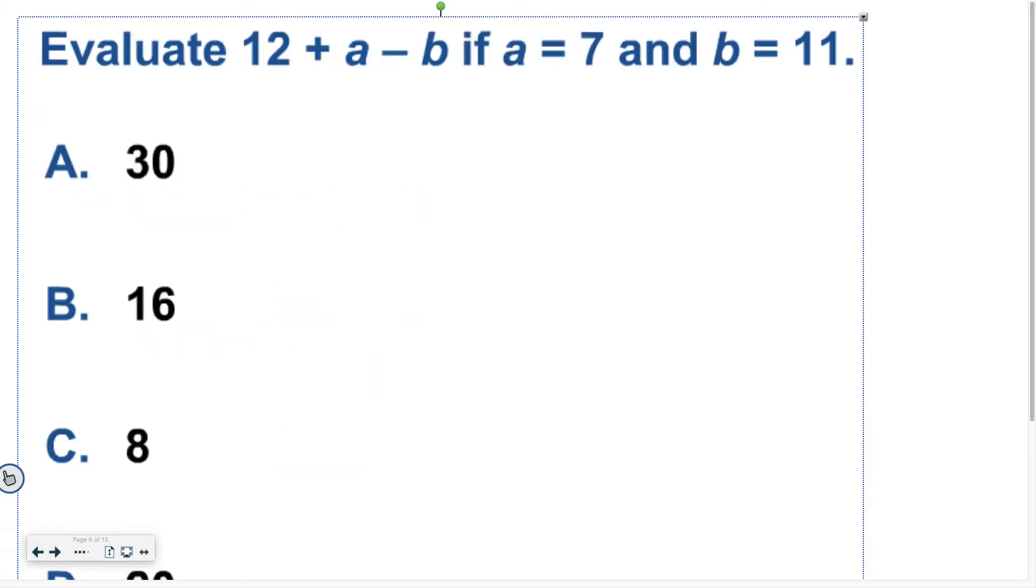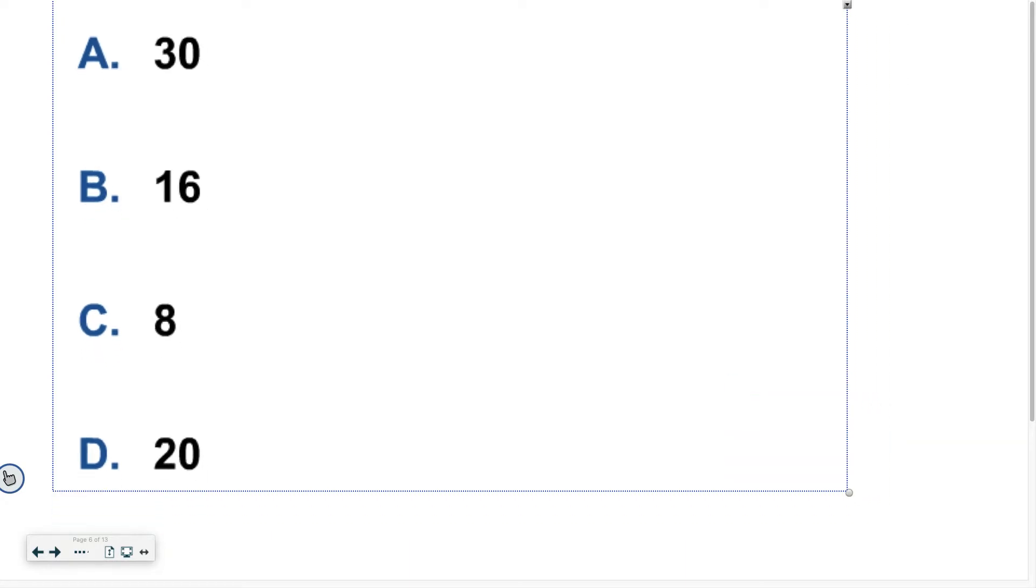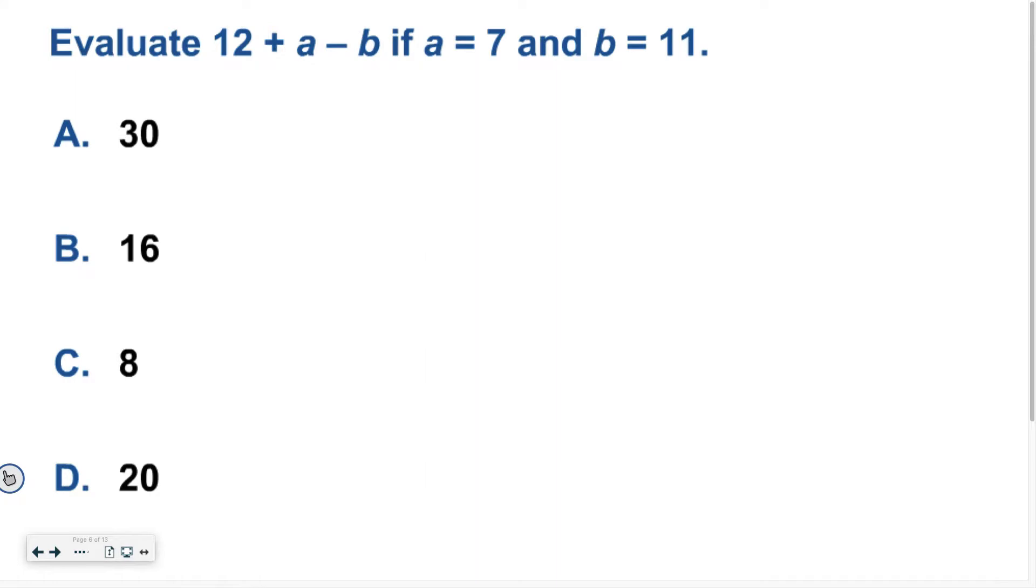Okay, so why don't you guys try this one? So you start by plugging in the numbers. So we have evaluate 12 plus A minus B if A equals 7 and B equals 11. Good luck. Hopefully you ended up with letter C or 8. And hopefully your work matches what I have over on the right-hand side of the screen. I replaced A with 7, B with 11. I started by doing 12 plus 7 because addition and subtraction are on the same level of PEMDAS, so I have to go left from right. So 12 plus 7 gives me 19. 19 minus 11 is 8.